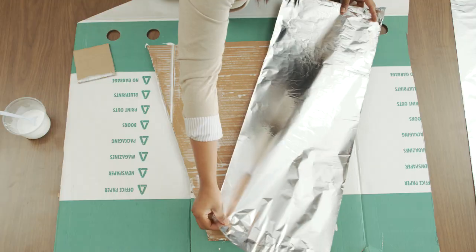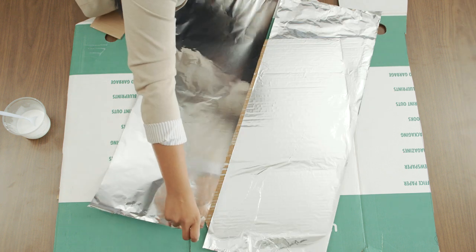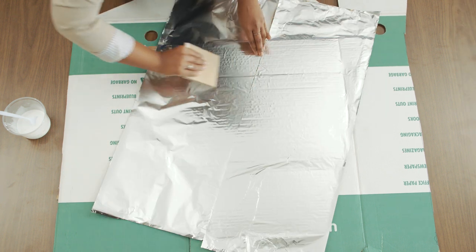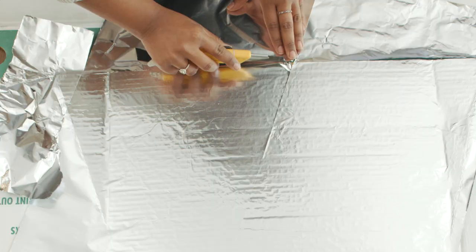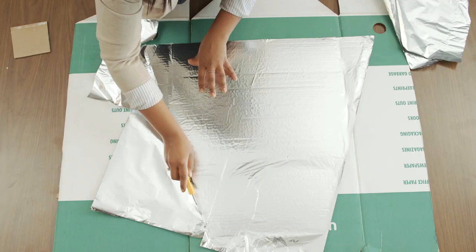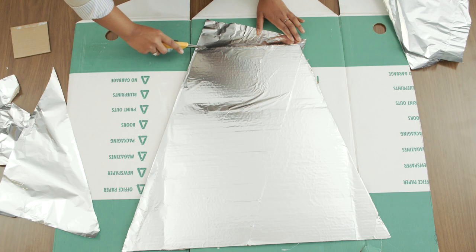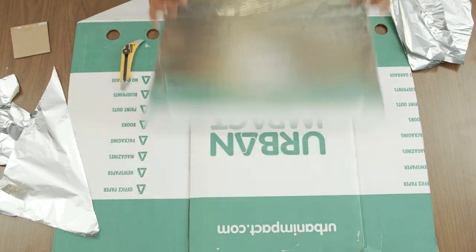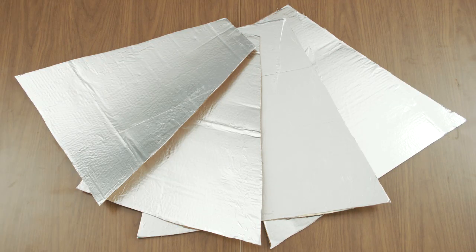Before the glue dries, place the foil on the cardboard shiny side up and smooth it down over the entire surface. Trim the foil so that it is flush with the edge of the cardboard all around. Set aside to dry and repeat these steps for the remaining sections.